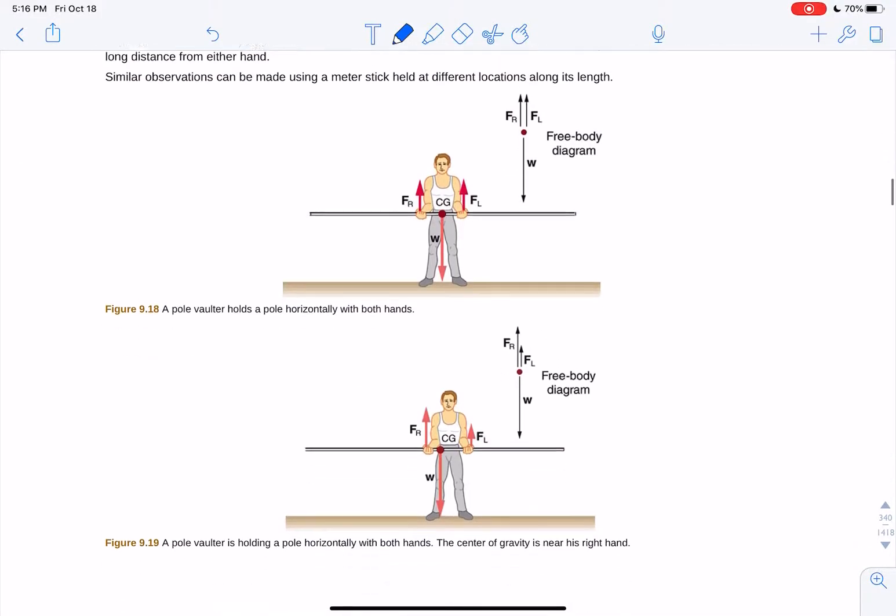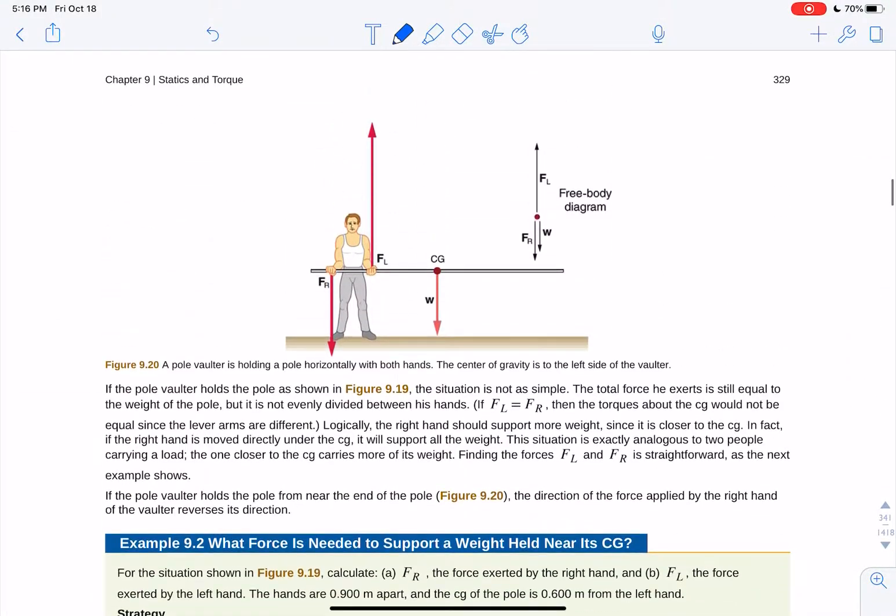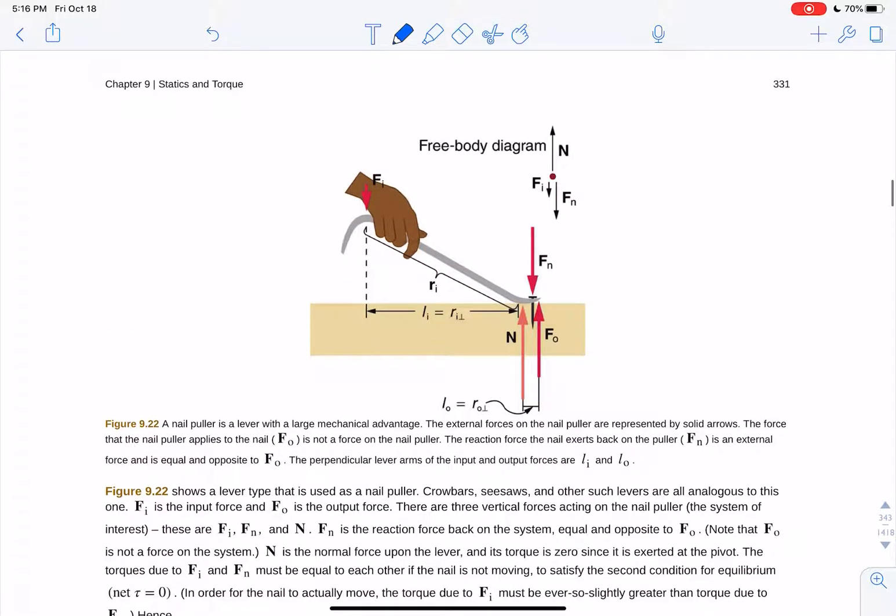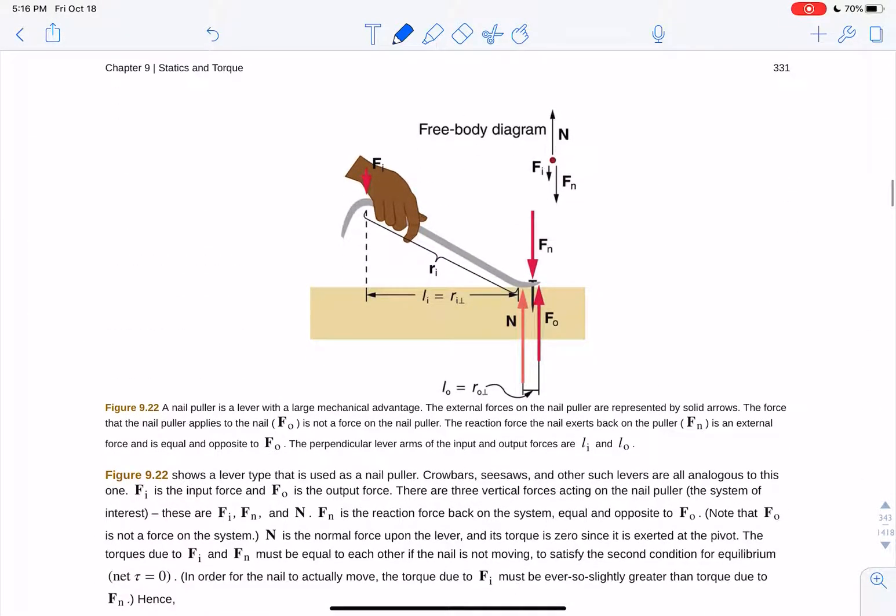You get some examples of how to solve some of these problems and free body diagrams. Then you've got your simple machines here. For example, if you want to pull a nail out of the ground, you use one of these tools here, a pry bar, to pry the nail out.